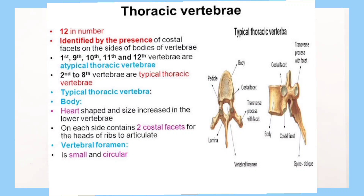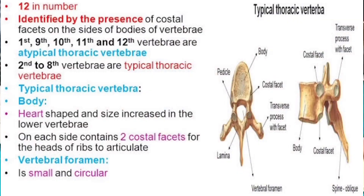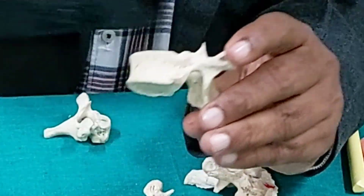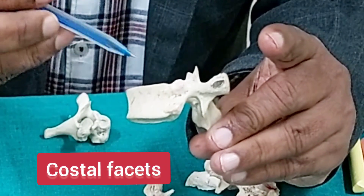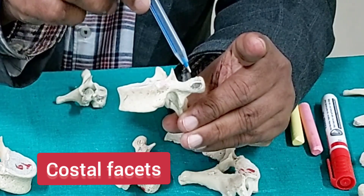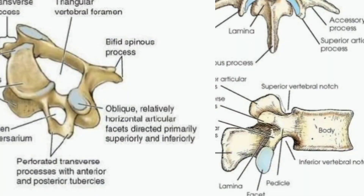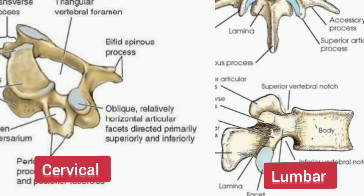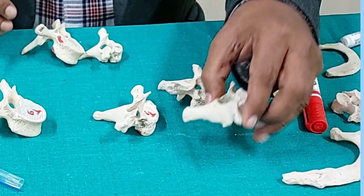Now I will show you the features of the typical ones, then the atypical ones. Let us first discuss the features of typical thoracic vertebra. Before that, we must identify the thoracic vertebra. By just one point I can identify thoracic vertebra and exclude the cervical and the lumbar vertebra. In the thoracic vertebra, you will see on the body there are costal facets, which articulate with the ribs.